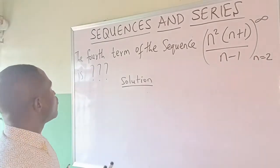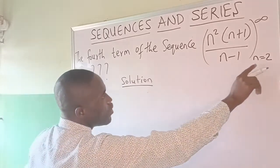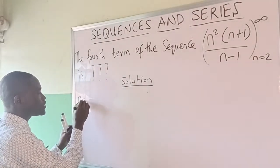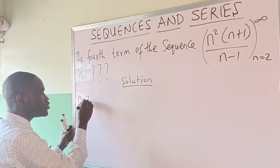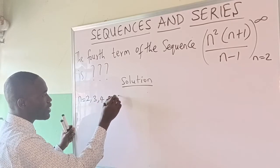Now when you see find the fourth step of the sequence and they are telling you n equals 2, what you write is: n=2, n=3, n=4, n=5, n=6, and continue.